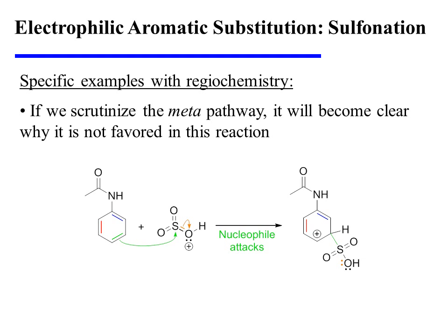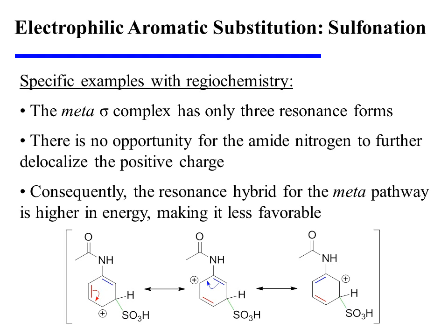If we scrutinize the meta-pathway, it will become clear why it is not favored in this particular reaction. The initial attack of a pi bond of the aromatic ring on the potent electrophile could generate a meta-sigma complex. However, this meta-sigma complex has only three resonance forms. There is no opportunity for the amide nitrogen to further delocalize the positive charge, and consequently the resonance hybrid for the meta-pathway is higher in energy, making it less favorable than the ortho- and para-pathways.